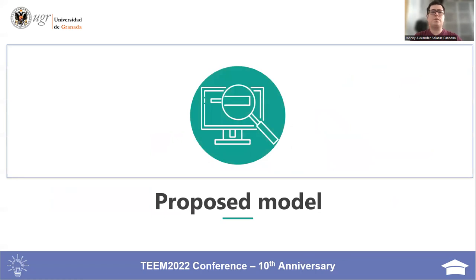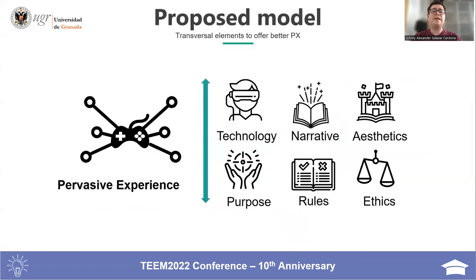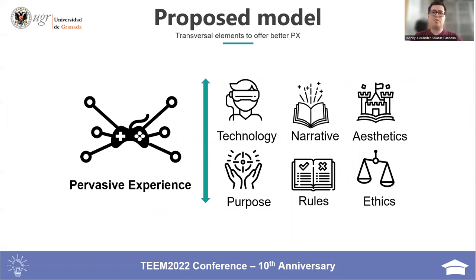Proposed model. Six universal elements, adjusted to the particularities of older adults, should be considered when designing a pervasive experience for seniors. These elements are: aesthetics, narrative, technology to be used, game roles, purpose, and ethics.